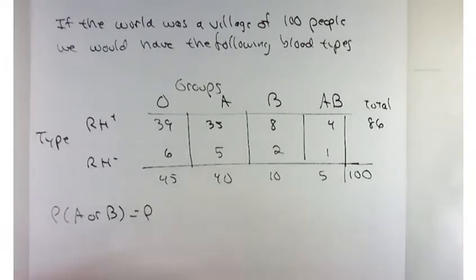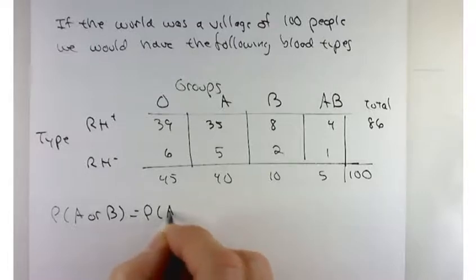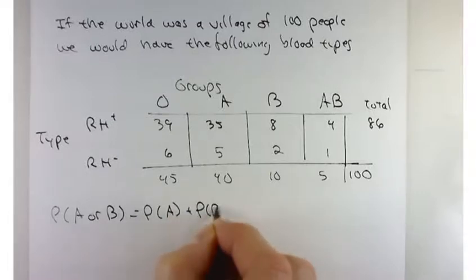So a good thought or a good approach would be this. The probability of A plus the probability of B. Let's see if that works.